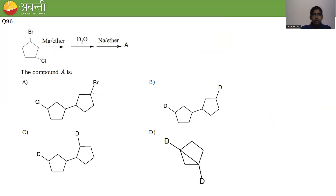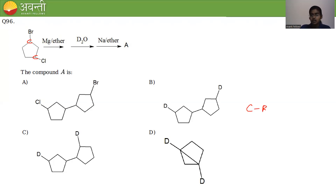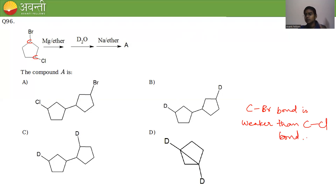Last question: a compound with both C-Br and C-Cl bonds is treated with Mg/ether. Since C-Br bond is weaker than C-Cl, Mg inserts into the C-Br bond first, forming a Grignard reagent at that position.